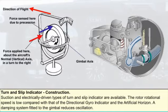A damping system fitted to the gimbal reduces oscillation — this may be the piston-in-cylinder type or an electromagnetic device. Stops limit the ability of the gimbal to tilt to an angle corresponding to a turn of about 20 degrees per second.